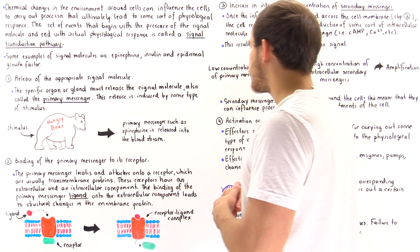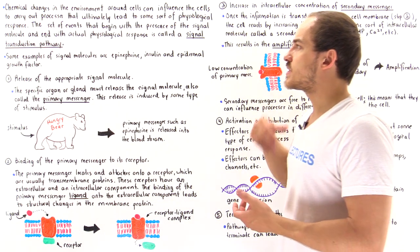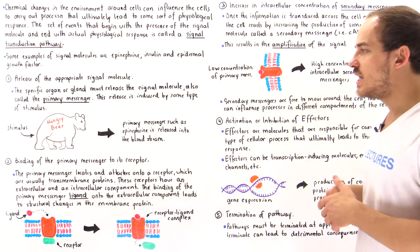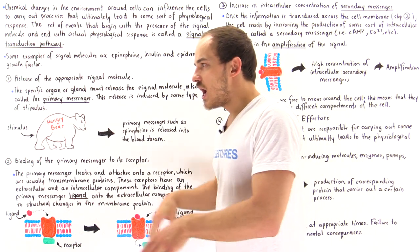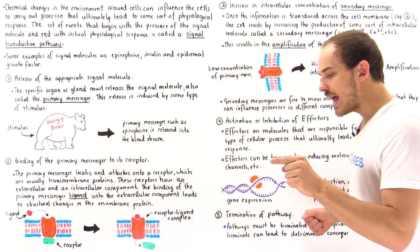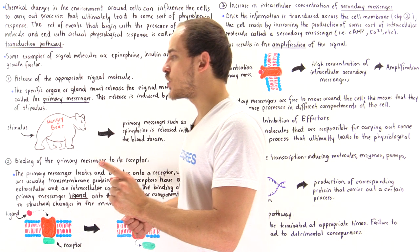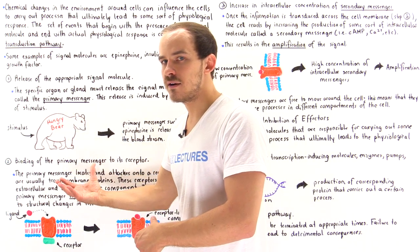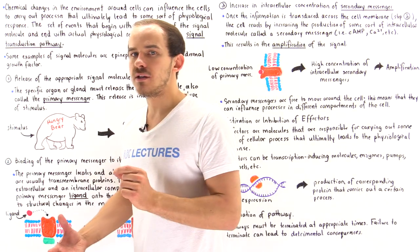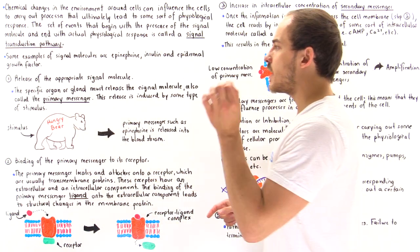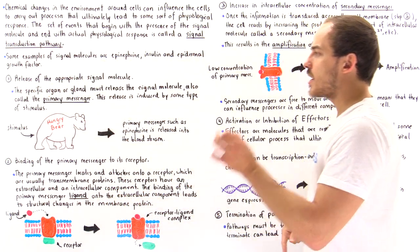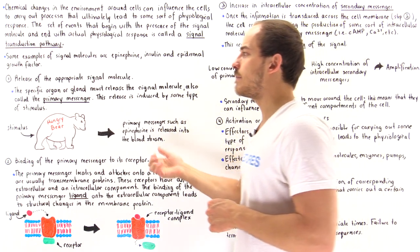What I'd like to do in this lecture is generalize the steps of the signal transduction pathway. Step one: I see the bear, I panic and begin to run, and at that moment the adrenal gland begins releasing epinephrine. So there is some stimulus — the hungry bear — and that stimulus induces the release of a particular signal molecule known as the primary messenger molecule. Step one is the release of the appropriate primary messenger molecule as a result of some type of external stimulus.